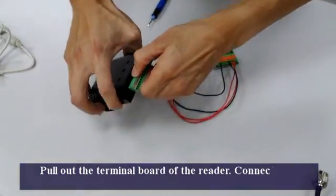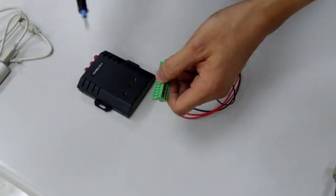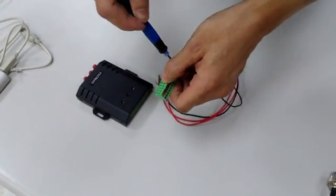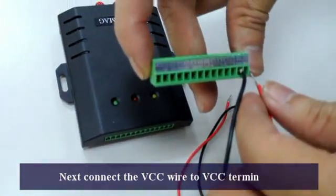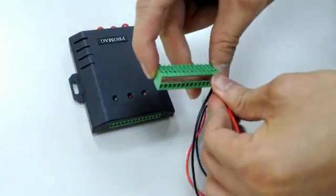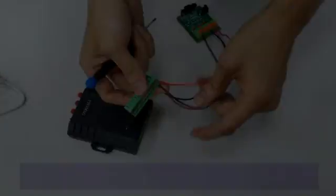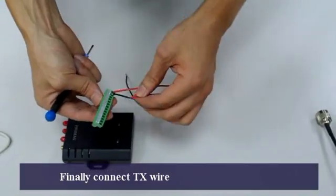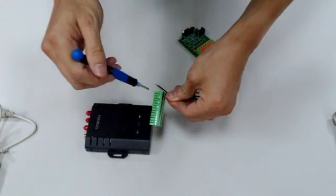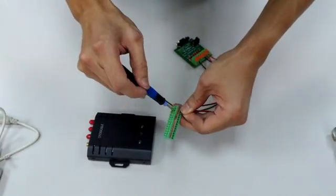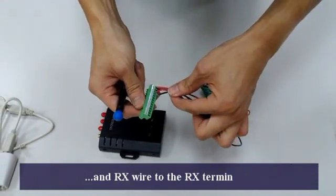Pull out the terminal board of the reader. Connect the ground wire to the board's ground terminal. Next, connect the VCC wire to VCC terminal, and RX wire to the RX terminal.